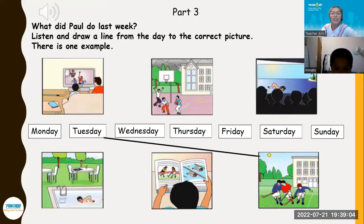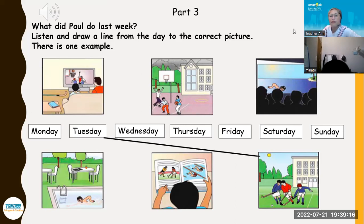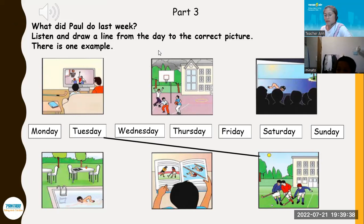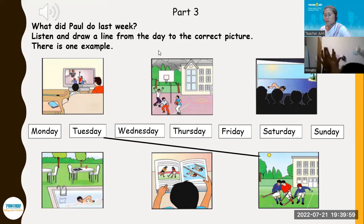Now let's move. What did Paul do last week, Andy? You have to draw the line from the date to the correct picture. Part Three. Look at the pictures. What did Paul do last week? Listen and look. There is one example. Hello, Paul. Did you have a good week? Yes, Grandma. I played a lot of sport. What did you do on Tuesday? On Tuesday, I played hockey at school. Can you see the line from the word Tuesday? On Tuesday Paul played hockey at school. Now you listen and draw lines.